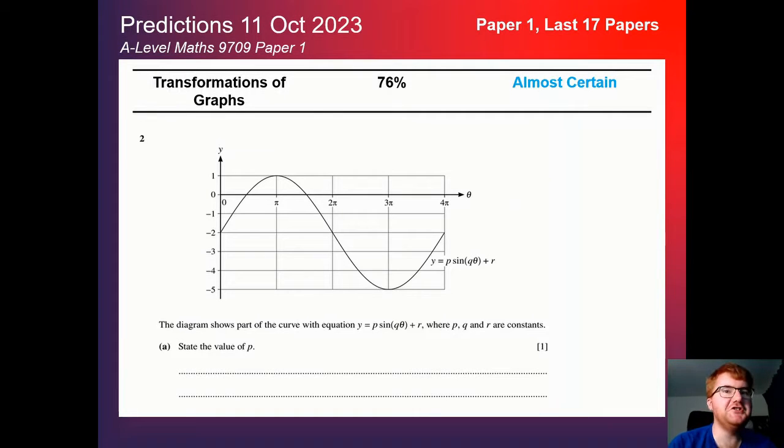Okay, welcome to another Ginger Math Petition video where I'm going to go through my predictions for the A-Level Maths 9709 course and the paper one which is on the 11th of October. I've been going through the last 17 papers, so even more papers than the last time to make sure you get the very best predictions for the paper. So let's get started.